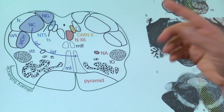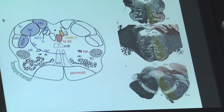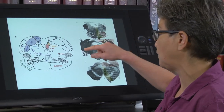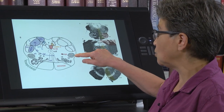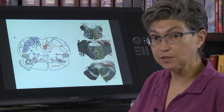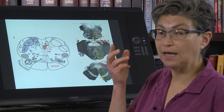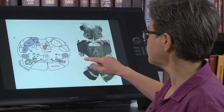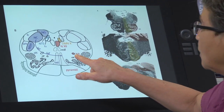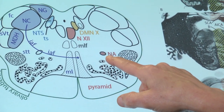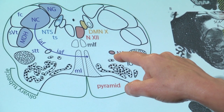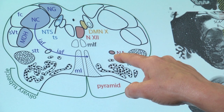Remember that this is an excitatory drive onto the T1, T2 preganglionic sympathetics that are going up to the face. So that's going to produce an ipsilateral Horner syndrome: ipsilateral ptosis, ipsilateral miosis, anhydrosis, and facial flushing. If the lesion goes a little bit farther medially, nucleus ambiguus can be affected, and that's going to produce a loss of or impairment of both swallowing and speech — so that's dysarthria and dysphagia.